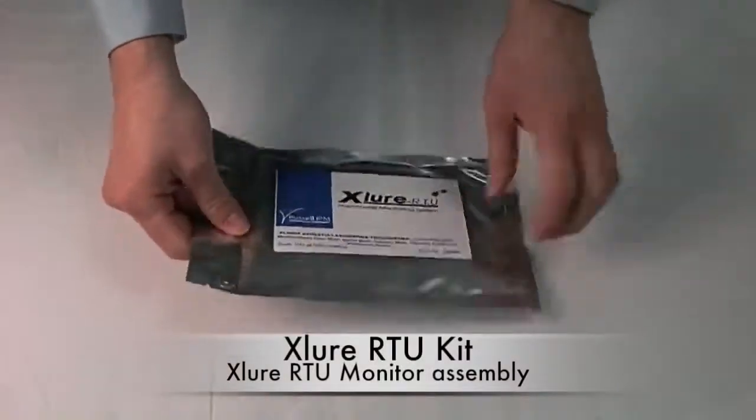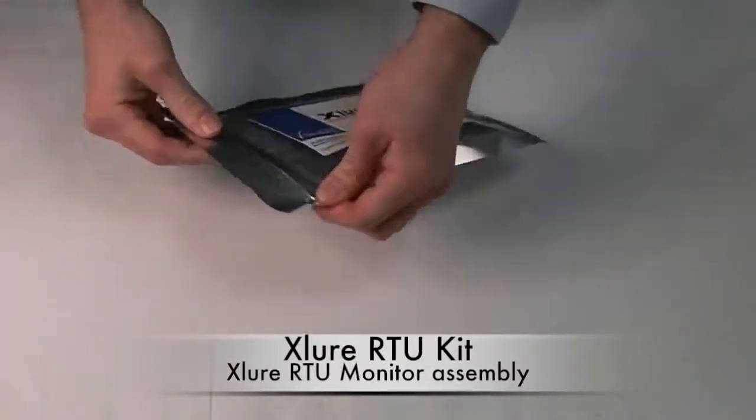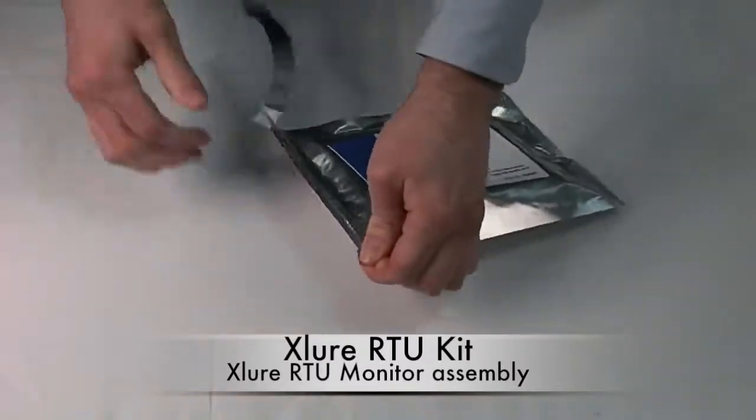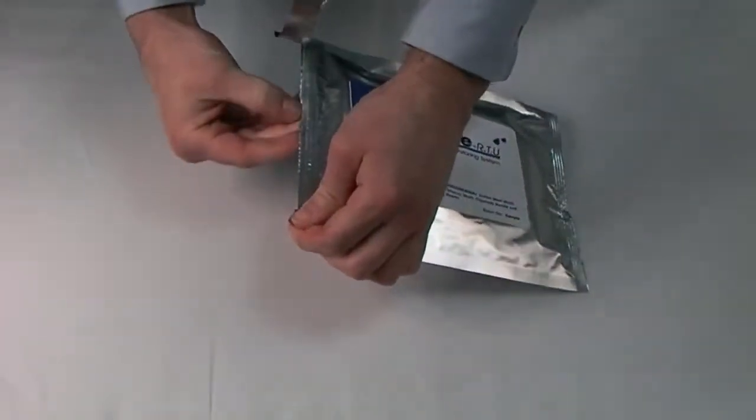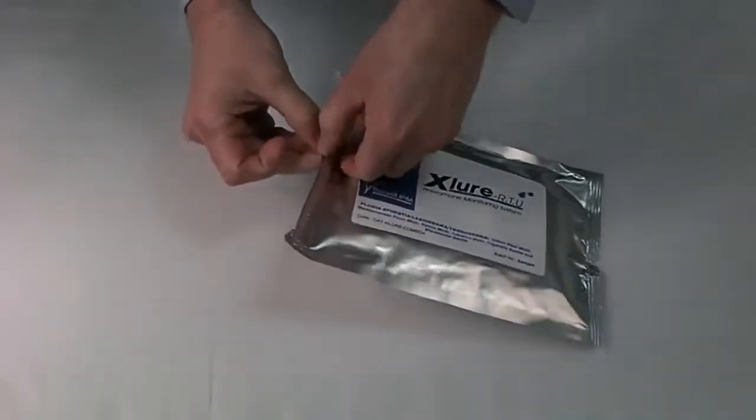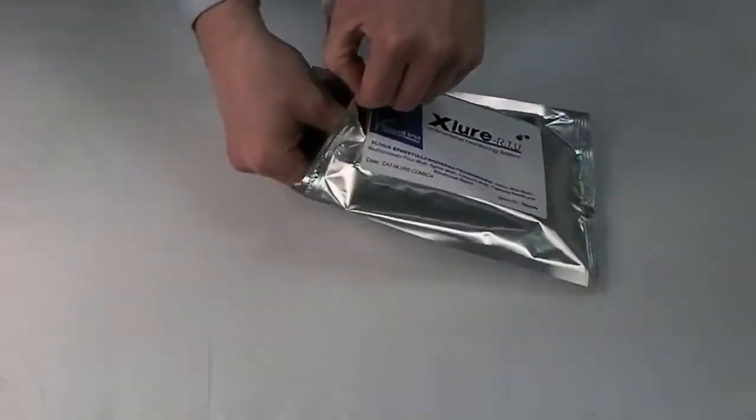Welcome to the trap assembly video of the Exlure RTU from Russell IPM. The traps are supplied in packs of six. Simply open the box and remove the foil bag that the traps are supplied in.